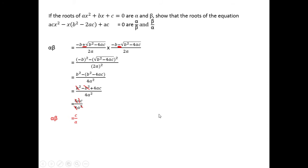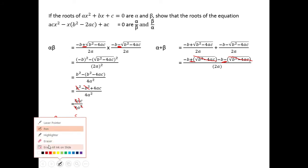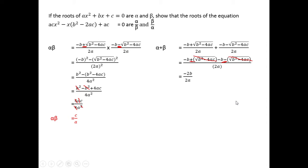Now we need to find the sum of alpha and beta. We take alpha plus beta and substitute the two expressions. The denominators are equal, so we don't need a common denominator. The square root terms cancel out due to the plus and minus, leaving minus 2B over 2A. The twos cancel, and we get alpha plus beta equals minus B over A.